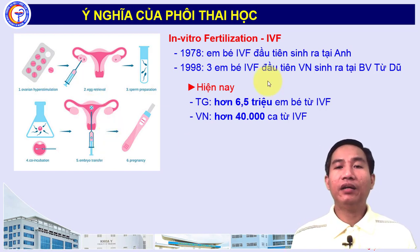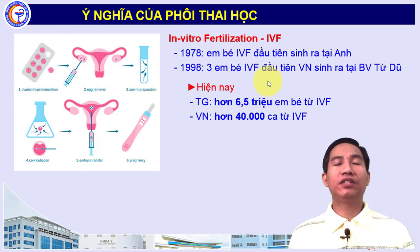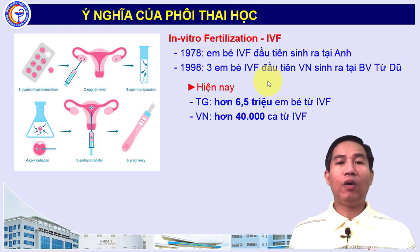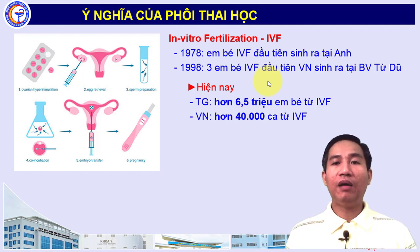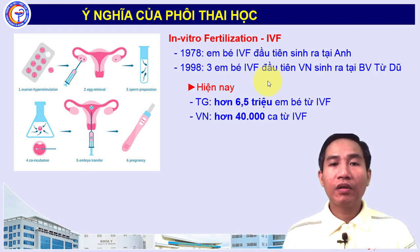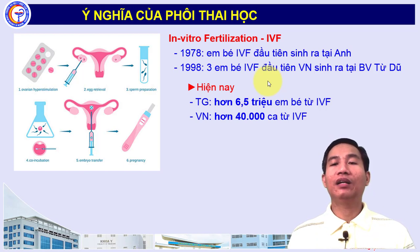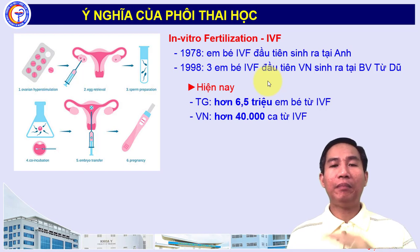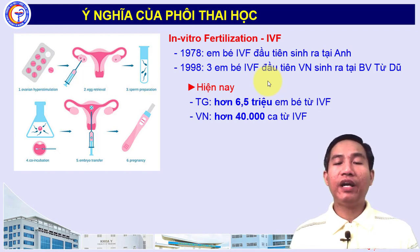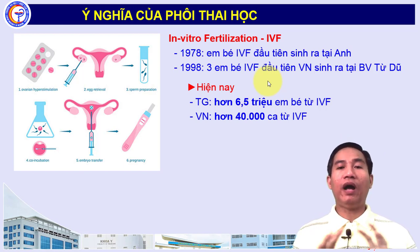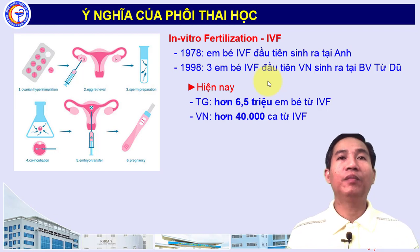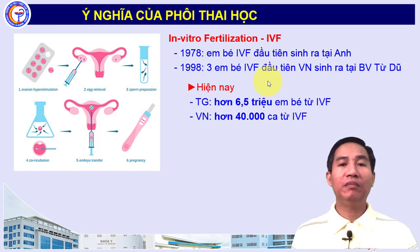Trên thế giới, em bé được thụ tinh trong ống nghiệm đầu tiên ra đời ở Manchester, Anh năm 1978 bởi hai nhà khoa học Edwards và Patrick. Năm 2010, ông Edwards đã được nhận giải Nobel khoa học. Ở Việt Nam, từ năm 1998 vào ngày 30 tháng 4, ba em bé đầu tiên ra đời tại Bệnh viện Từ Dũ. Hiện nay trên thế giới đã có hơn 6,5 triệu em bé ra đời từ IVF; ở Việt Nam đã hơn 40.000 ca, giúp các cặp vợ chồng hiếm muộn có hy vọng có con.